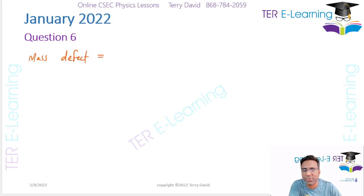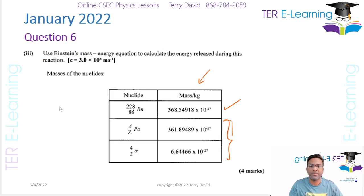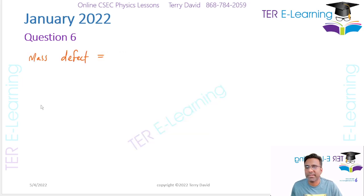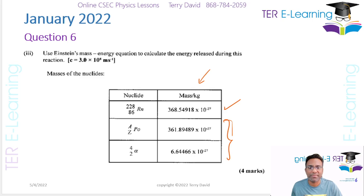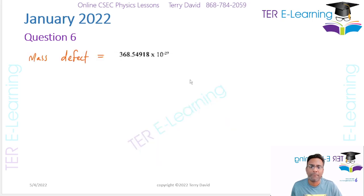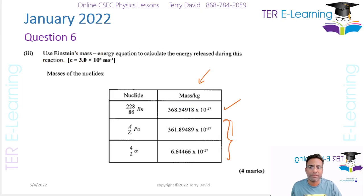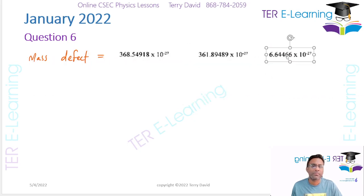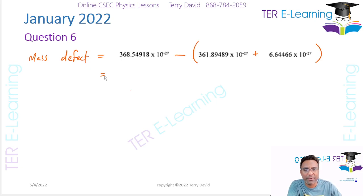So the mass defect is going to be the total mass on the left minus the total mass on the right. On the right side we have two masses: the mass of the polonium and the mass of the alpha particle. Let me show you what I'm doing on my calculator. We need to be careful how we enter this — it's important.